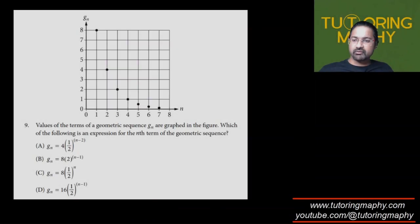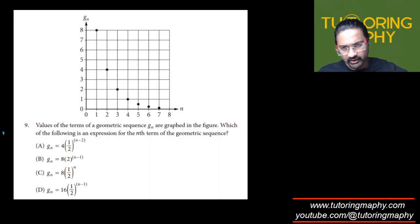Let's talk about question number nine. The values of the terms of a geometric sequence gn are graphed here, so which of the following is an expression for the nth term of the geometric sequence? For the nth term of the geometric sequence, I would be needing the first term and the common ratio.